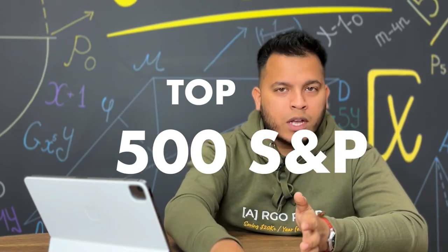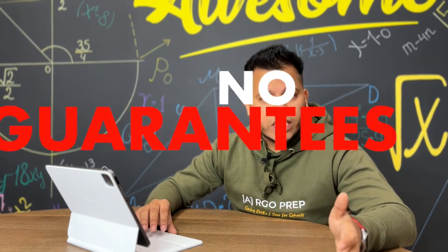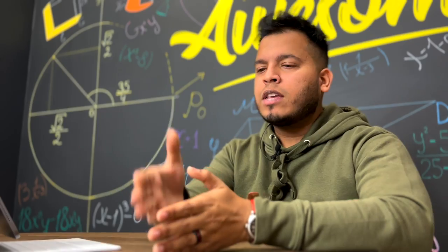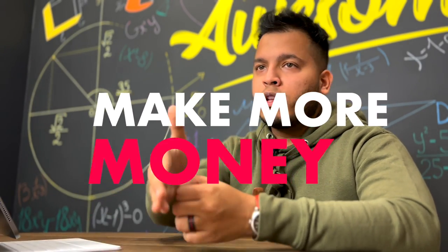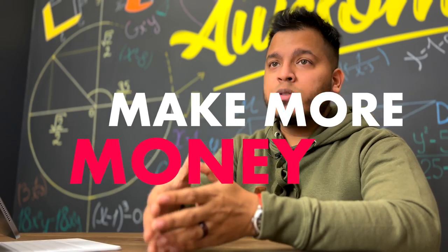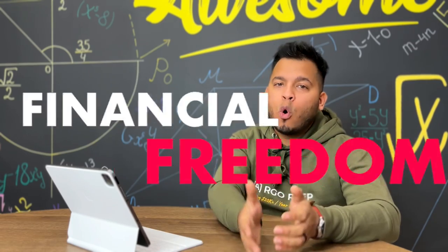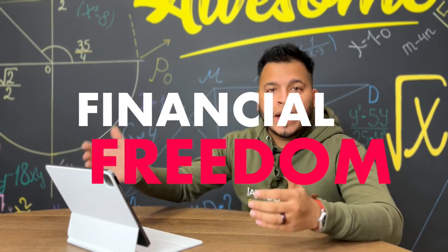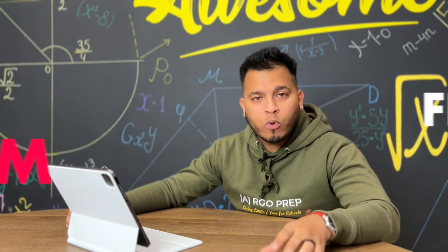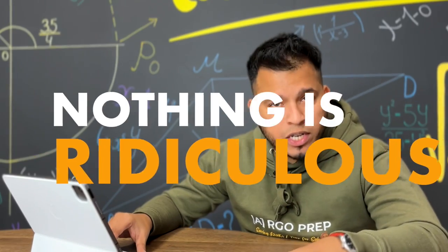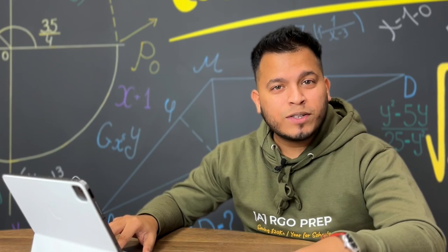About 500 companies in the stock market. Nothing is guaranteed in life. You need to make more money. How do you do that? Well, you learn specific skills to go ahead and get a higher paying job. The only way to financial freedom is you have to earn more. Nothing is ridiculous — it's only the limitations in your head.